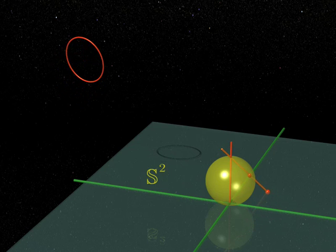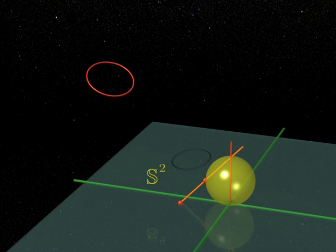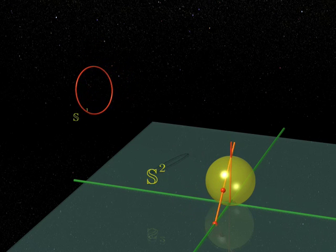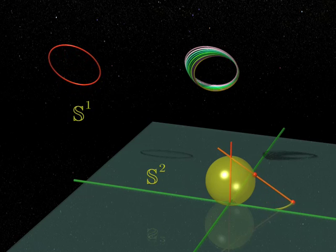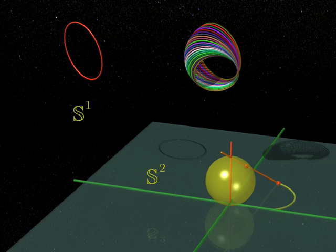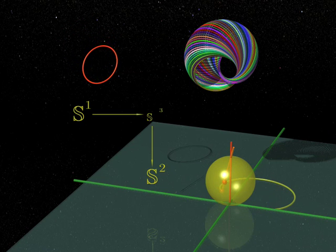So we have a circle for each point on the two-sphere. But a circle is a sphere of dimension one, isn't it? All these circles fill up the three-sphere. Each point on the three-sphere belongs to a single circle, and therefore defines a point on the two-sphere.